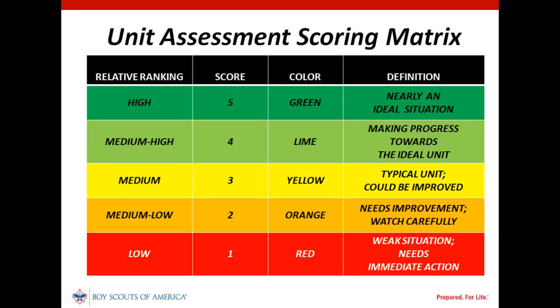Most of us are familiar with the red, yellow, green stoplight system, where red is bad and green is good. In the past, some have used numerical scores of 1 to 3, where 1 was high or good, and 3 was low. Our numerical scoring system now goes from 1 to 5, with 1 being low, equivalent to red, and 5 being high, equivalent to green, with 3 being medium or yellow.